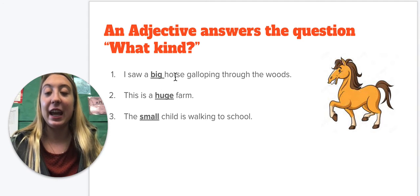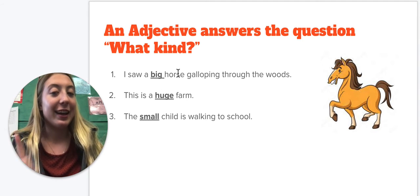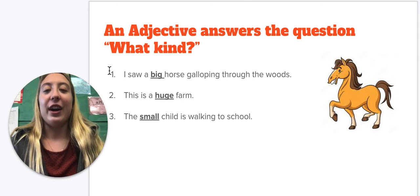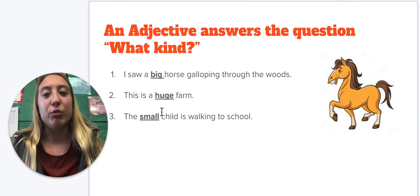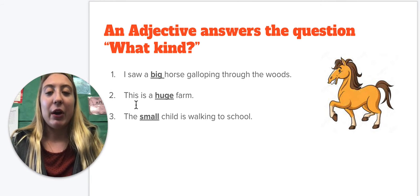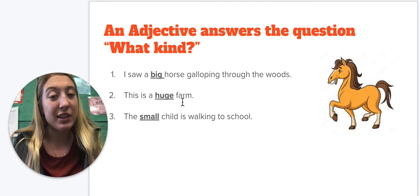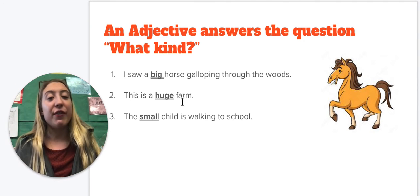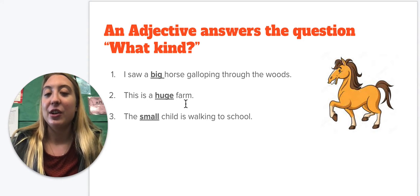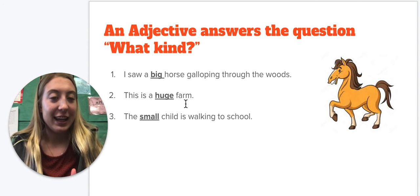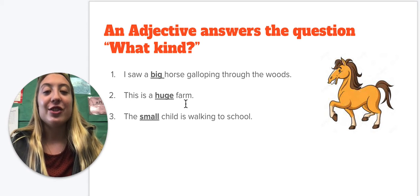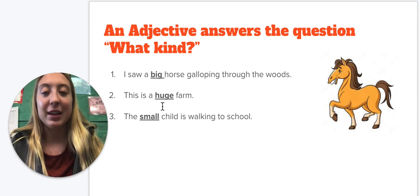And horse is an animal, so it is a noun. This is a huge farm. So now I'm looking, and huge describes what kind of farm. It's a huge farm. And farm is a place, which makes it a noun.